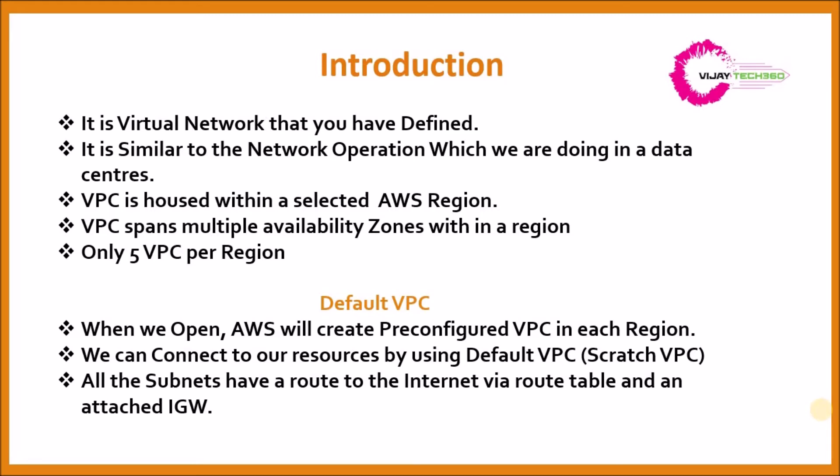Whenever you create an AWS account, you will see a default VPC in each region. If you navigate to the console and check VPCs, you will find a default VPC. You can connect resources like EC2 or ECS — whatever you deploy — using this default VPC to get those devices connected. It is also called a scratch VPC, which you can use by default.